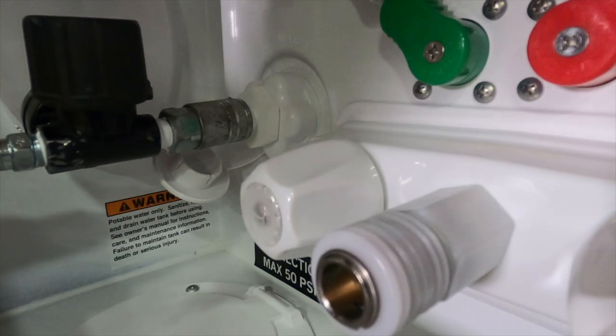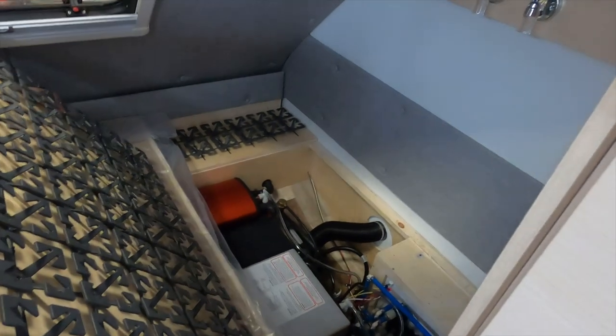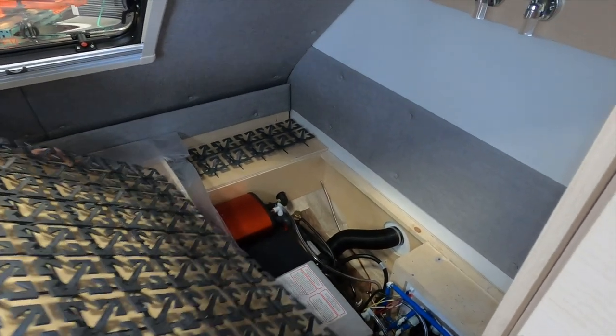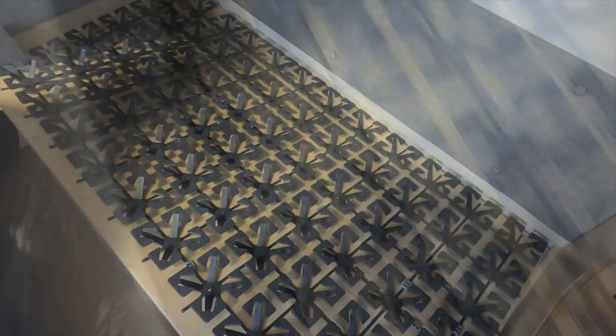Repeat the process for the hot and cold low point drains, the freshwater tank, and the gray tank. On the inside of the camper, you'll want to do the same thing for the drain for the water heater. After you're finished, replace the bed panel and secure it.